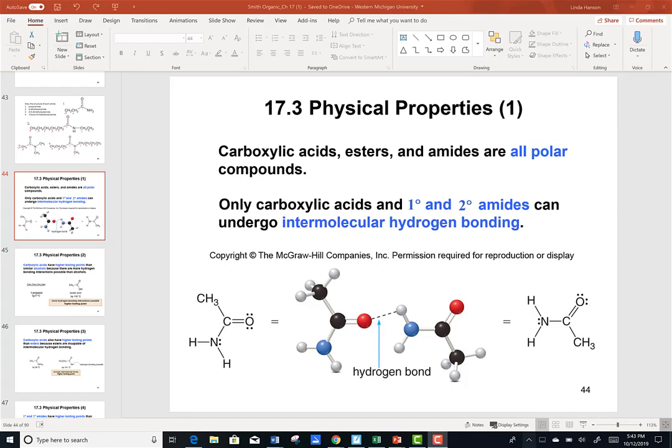In this video lesson, we're going to talk about the physical properties of our three functional groups from chapter 17: the carboxylic acids, esters, and amides.